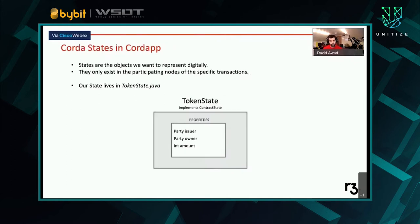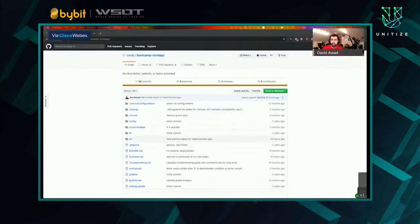The token state itself is the first thing we're going to build — the simplest abstraction. States only exist in the participating nodes of the specific transactions. If I sell a car to you, that state exists between the two of us — we are the only ones with knowledge of it. Our state is going to live in TokenState.java, so that's where we're going to start. Let me close out my PowerPoint.